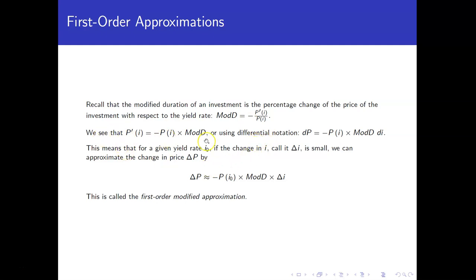So let's just rearrange the equation, multiply both sides by the price and a negative sign, or in particular, convert it to differential notation because we have a derivative here. So we can write it as dp is equal to the opposite of the price at a particular investment yield rate, times the modified duration times the change in the interest, or the di.